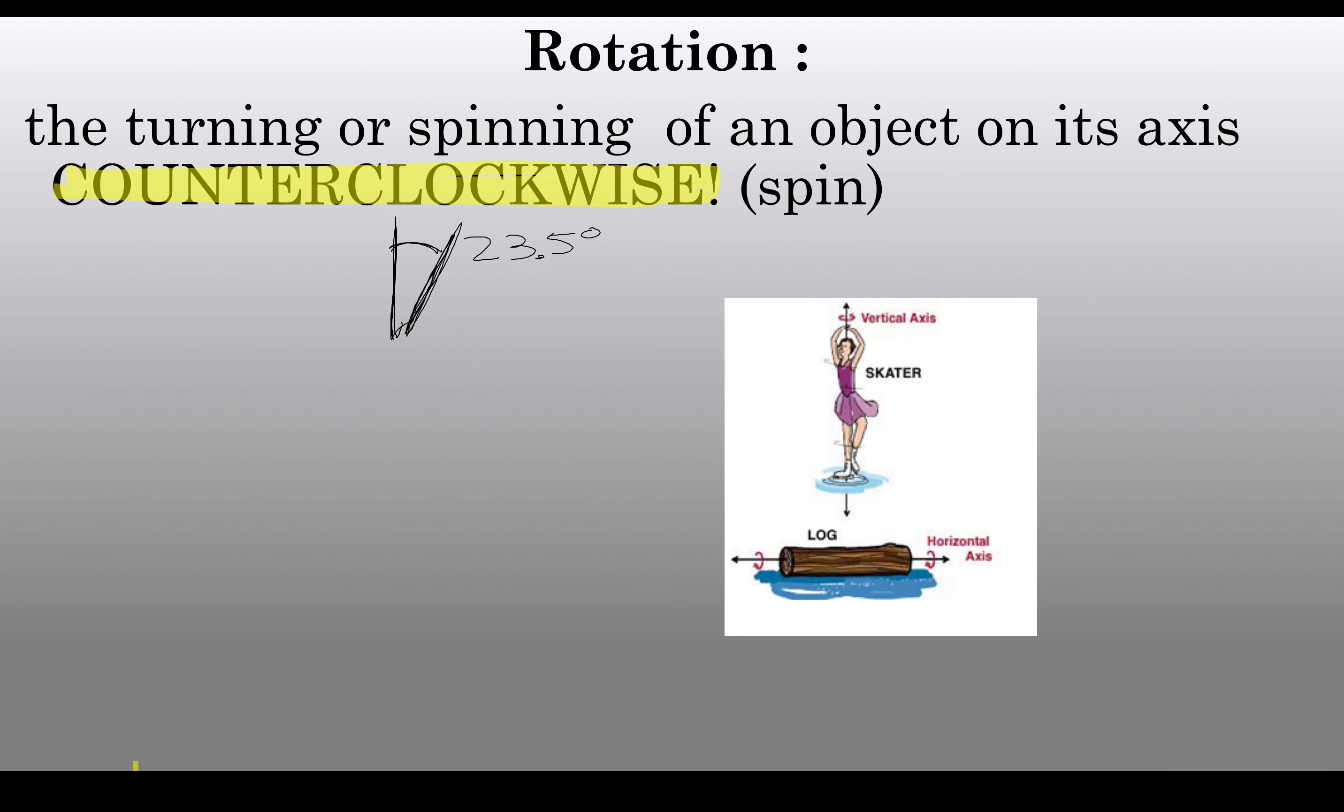So a few big vocab words. First is rotation, and that's when an object spins on its axis. So that's the Earth actually rotating or spinning once per day. If we look at the log rotating or this ice skater as she spins, that is rotation, meaning she's spinning on her own axis. If you're just standing up straight and you do a 360 or spin around once without actually running around a point or walking around a point, if you're just standing with both of your feet together and you just slowly do a rotation all the way around one time, that's a rotation.